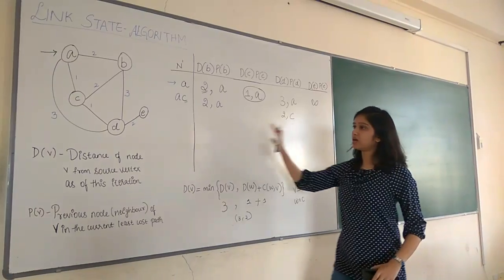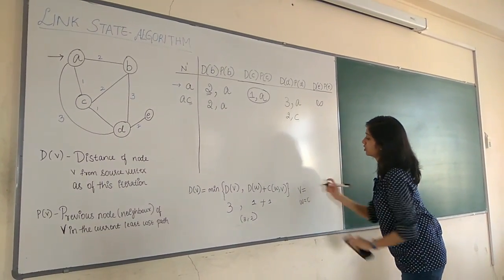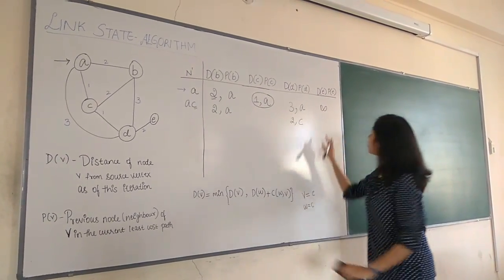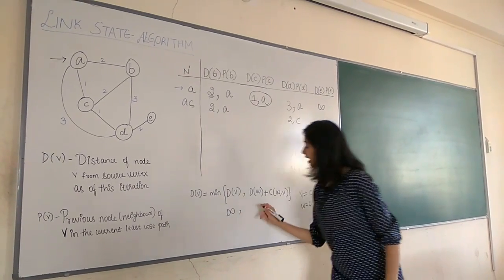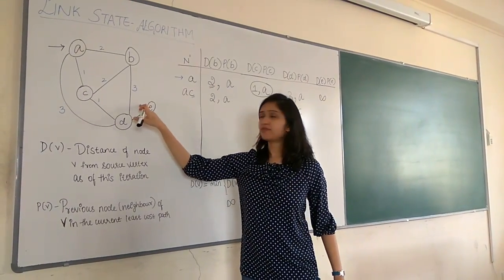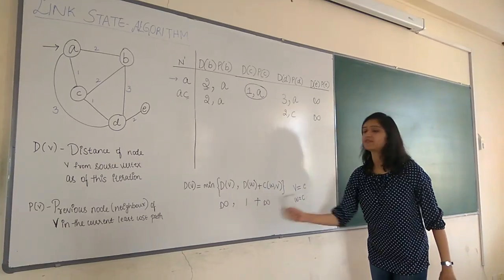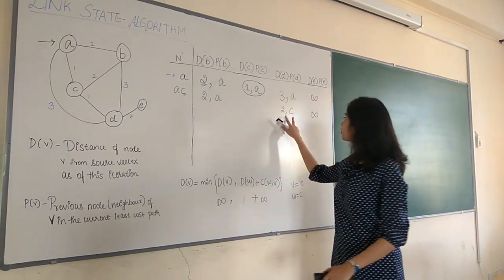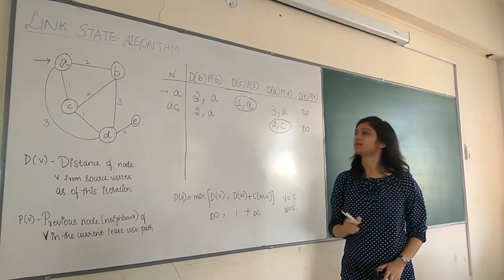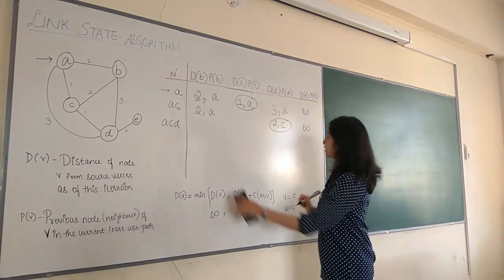Now among the unvisited vertices, we have two values which are equal: 2 comma A and 2 comma C. You can consider any vertex of your choice — I will be considering 2 comma C, which means D is added. So the subset is now A, C, and D. Again, we repeat the same steps.